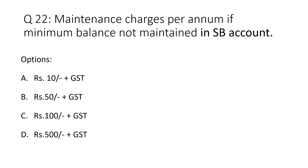Question 22: Maintenance charges per annum if minimum balance is not maintained in SB account. Option A: rupees 10 plus GST. Option B: rupees 50 plus GST. Option C: rupees 100 plus GST. Option D: rupees 500 plus GST. The correct answer is rupees 100 plus GST. If the balance amount becomes zero, the account will be closed automatically.